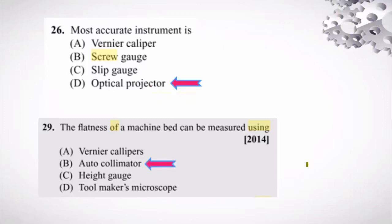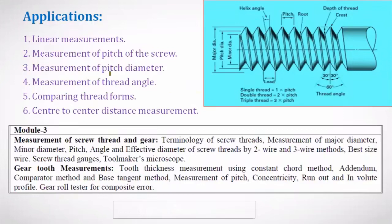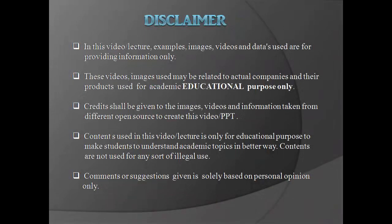The auto collimator is used to measure the flatness and straightness of a machine bed — this experiment is also performed in the MMM lab. Applications of the tool maker microscope include: linear measurements, measurement of pitch of the screw, measurement of pitch diameter, thread angle, and center-to-center distance. It is not used to measure flatness — that is the auto collimator's application.